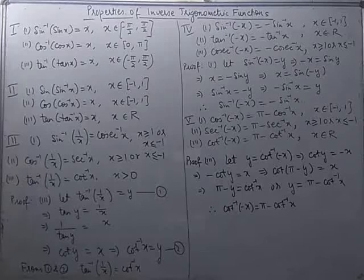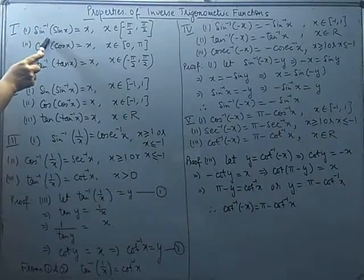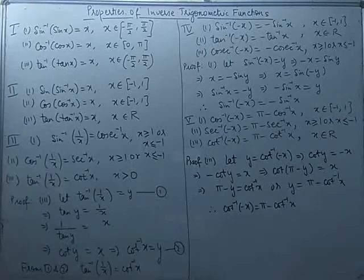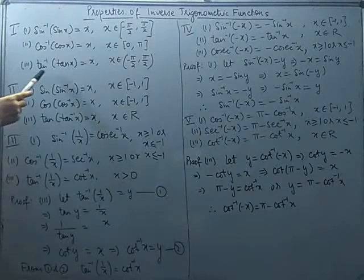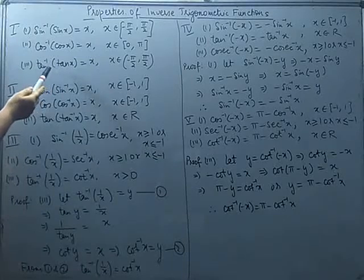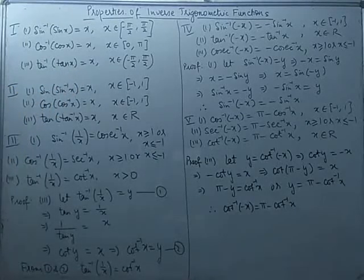The first property: if the function is of the form sin⁻¹(sin x), it can be denoted as x, where x belongs to the closed interval [-π/2, π/2]. In the same manner, cos⁻¹(cos x) can be denoted by x, and tan⁻¹(tan x) can be denoted by x. Note that they are not cancelling out with each other — tan⁻¹(tan x) is simply used as x.